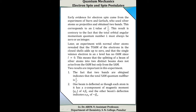Based on this experiment, two important results are obtained. First, the fact that two bands are obtained indicates that the total spin angular momentum quantum number is one-half. Second, one beam is deflected as though each atom in it has a z-component of magnetic moment mu_z of plus beta_e, and the other has mu_z equal to minus beta_e.